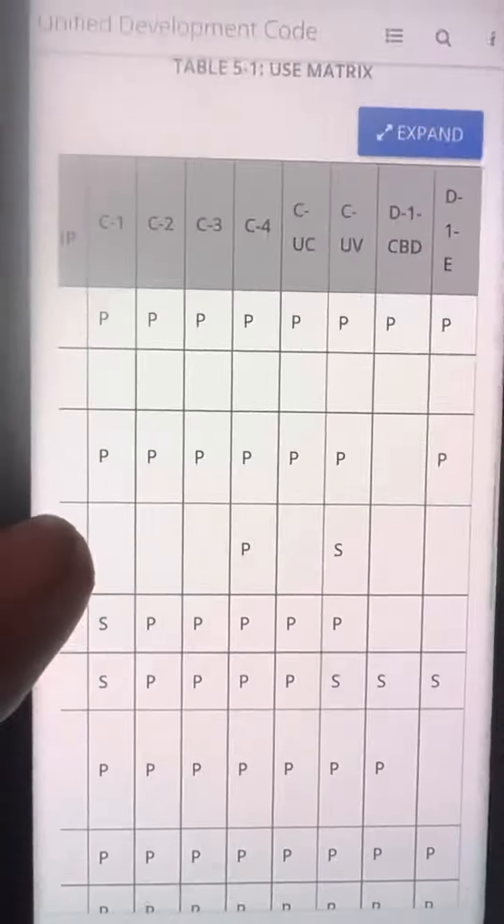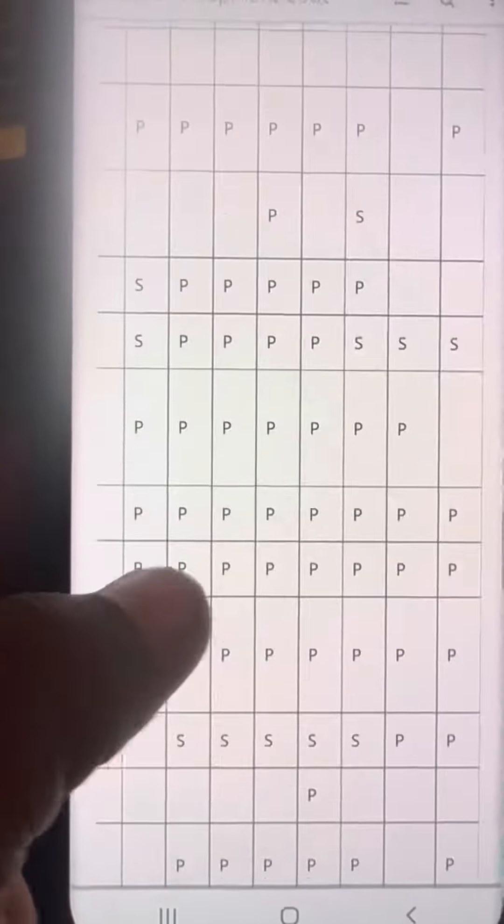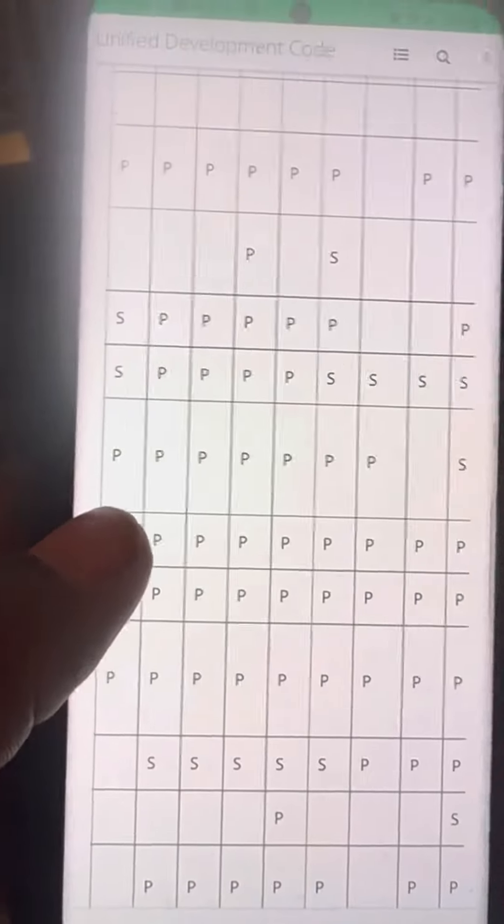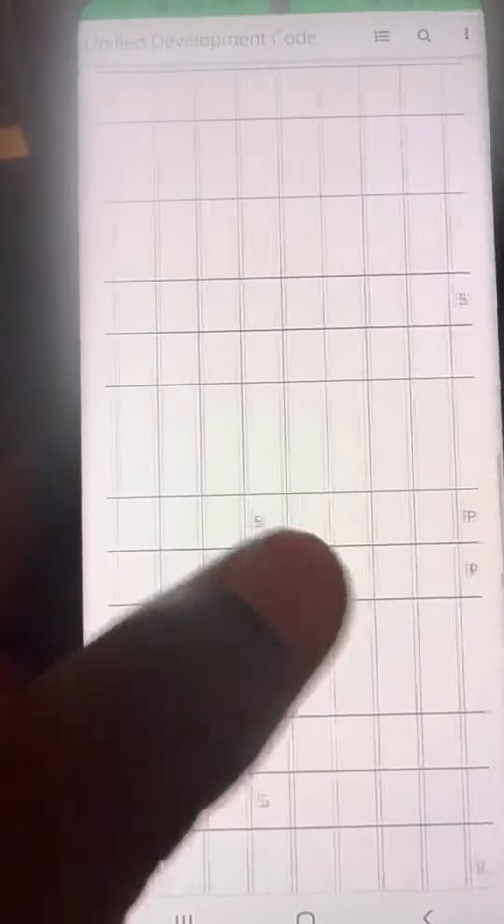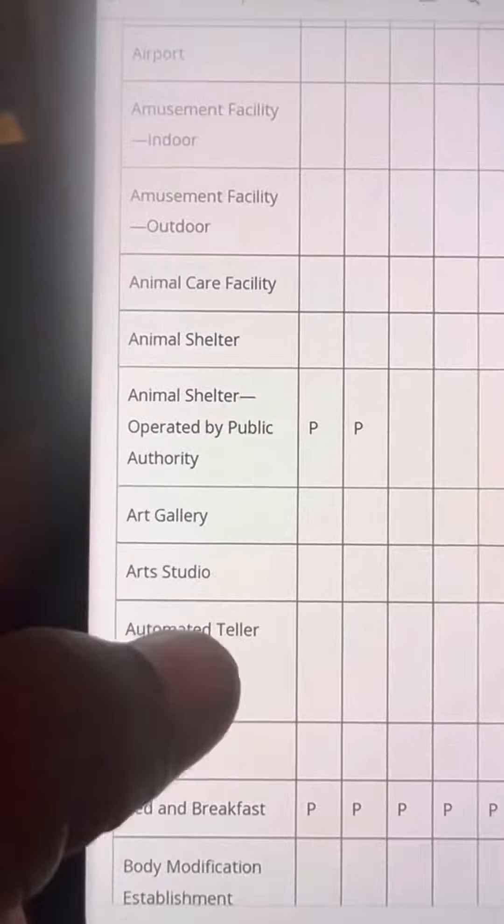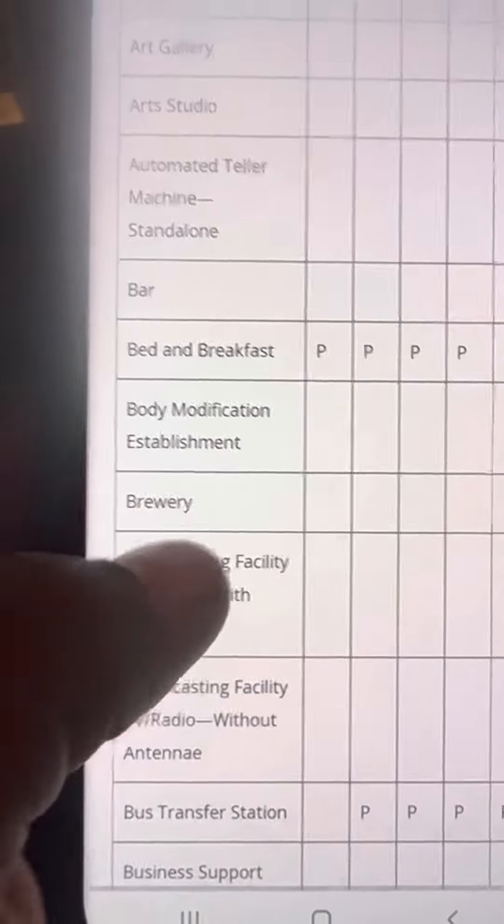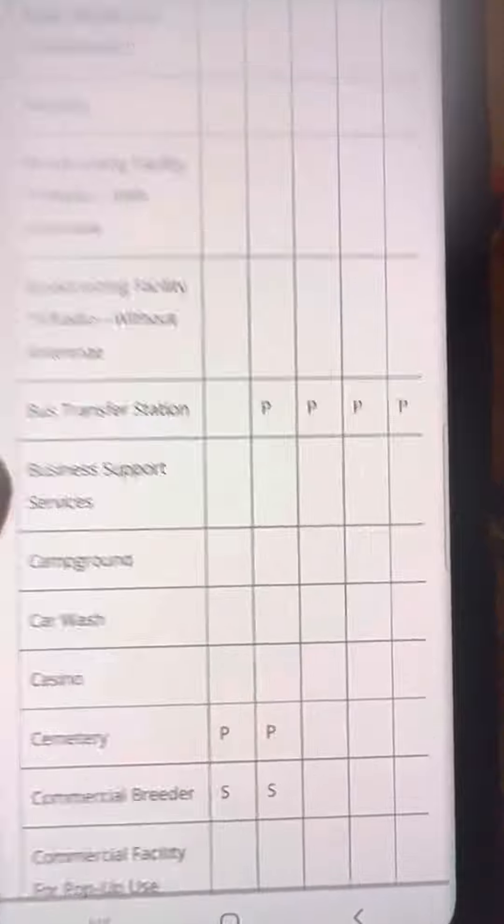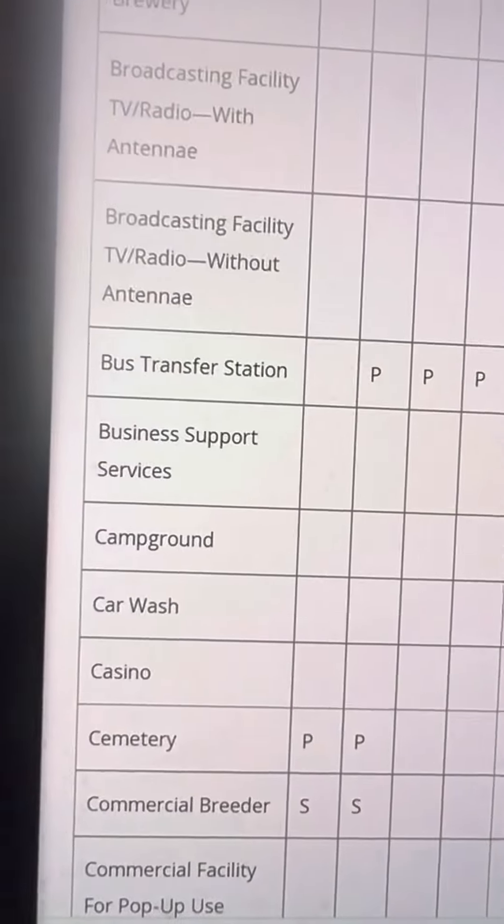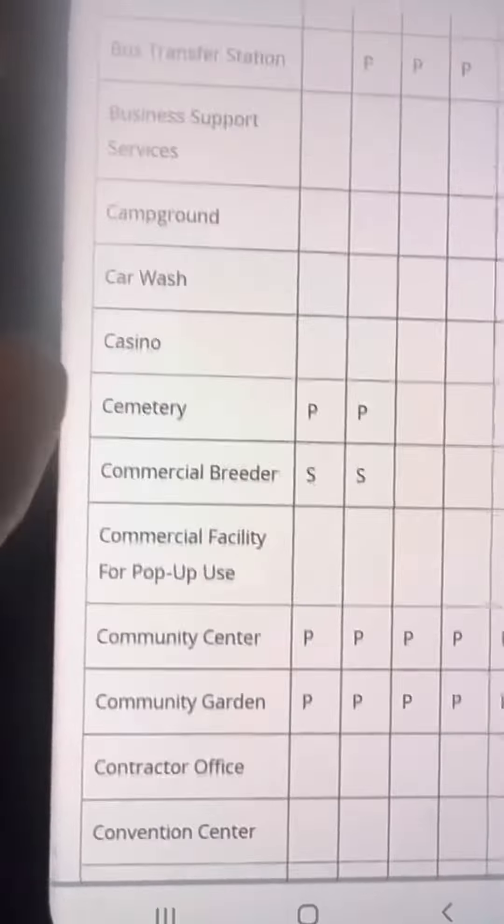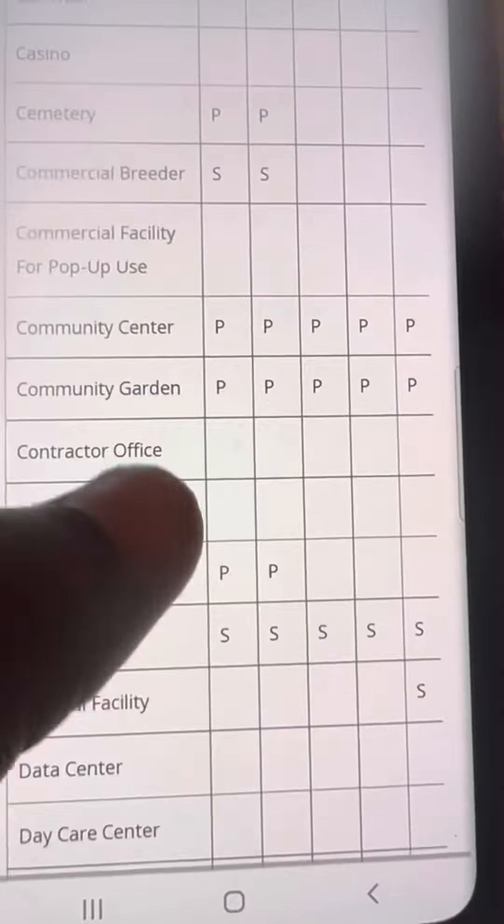But that special use permit, you pay six hundred dollars, you got to go before the city council. They're going to approve it. It'll be up to them if they approve it or not.